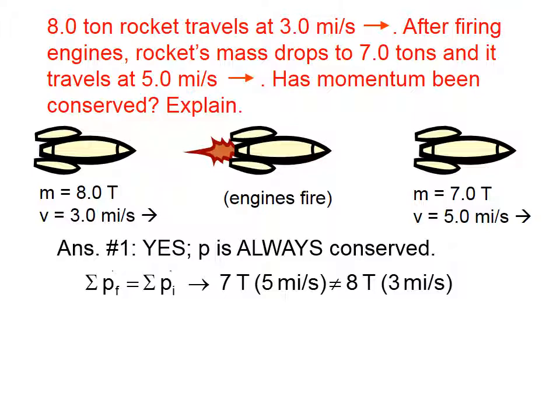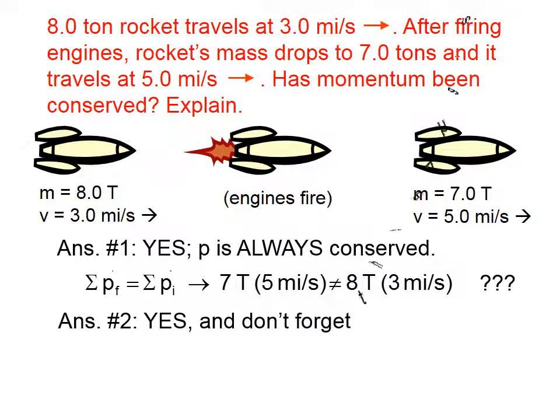And at the end, we have a mass of 7 and a velocity of 5, and that's 24. Wait a minute. That's 35. Uh-oh. Maybe momentum hasn't been conserved. Ah, but don't forget the exhaust gas.